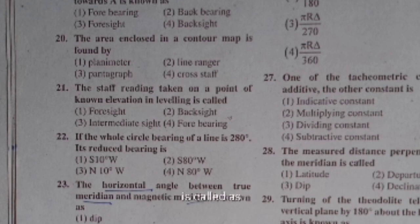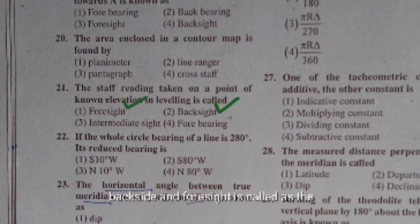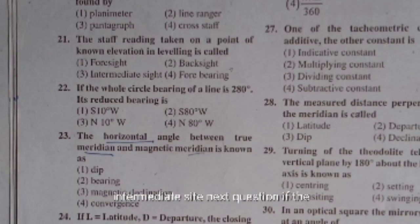In leveling, the staff reading taken on a point of known elevation is called back sight, the last reading is called foresight, and the staff reading between back sight and foresight is called intermediate sight.